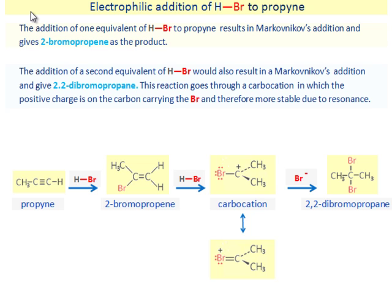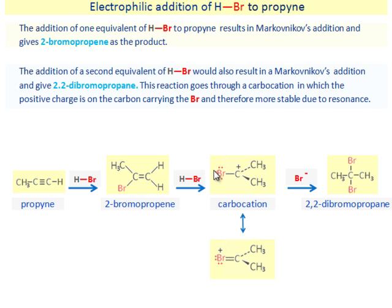Electrophilic addition of HBr to propyne. The addition of one equivalent of HBr to propyne results in Markovnikov's addition and gives 2-bromopropene as the product. The addition of a second equivalent of HBr also results in Markovnikov's addition and gives 2,2-dibromopropane. This reaction goes through a carbocation in which the positive charge is on the carbon carrying the Br, and therefore more stable due to resonance.